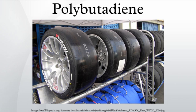Polybutadiene is a synthetic rubber that is a polymer formed from the polymerization of the monomer 1,3-butadiene. It has a high resistance to wear and is used especially in the manufacture of tires, which consumes about 70% of the production. Another 25% is used as an additive to improve the mechanical strength of plastics such as polystyrene and acrylonitrile butadiene styrene. Polybutadiene rubber accounted for approximately a quarter of total global consumption of synthetic rubbers in 2012.